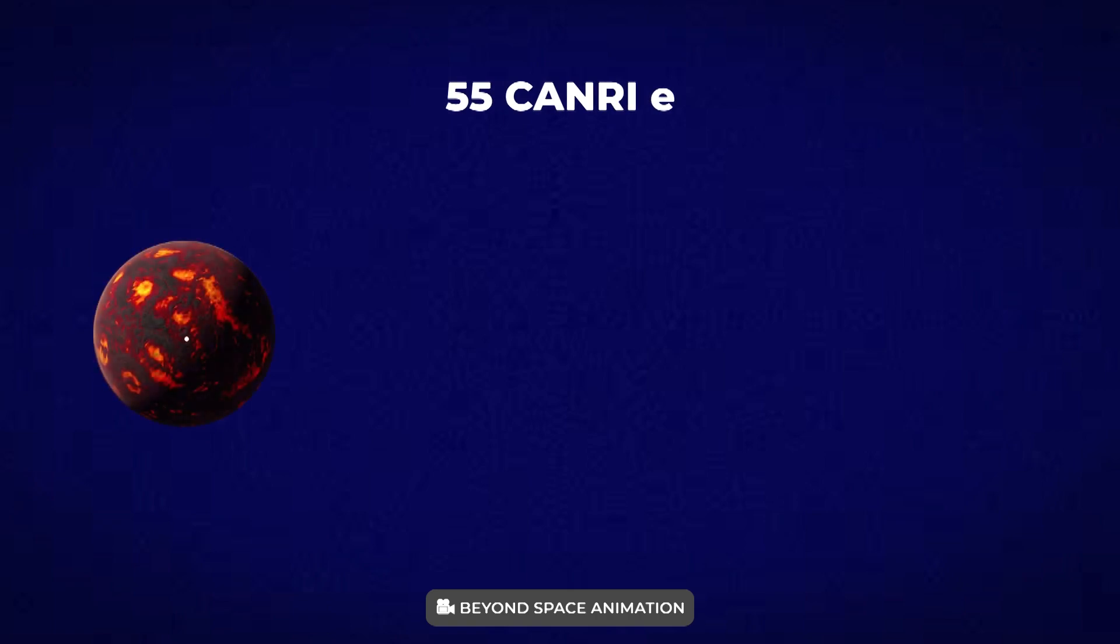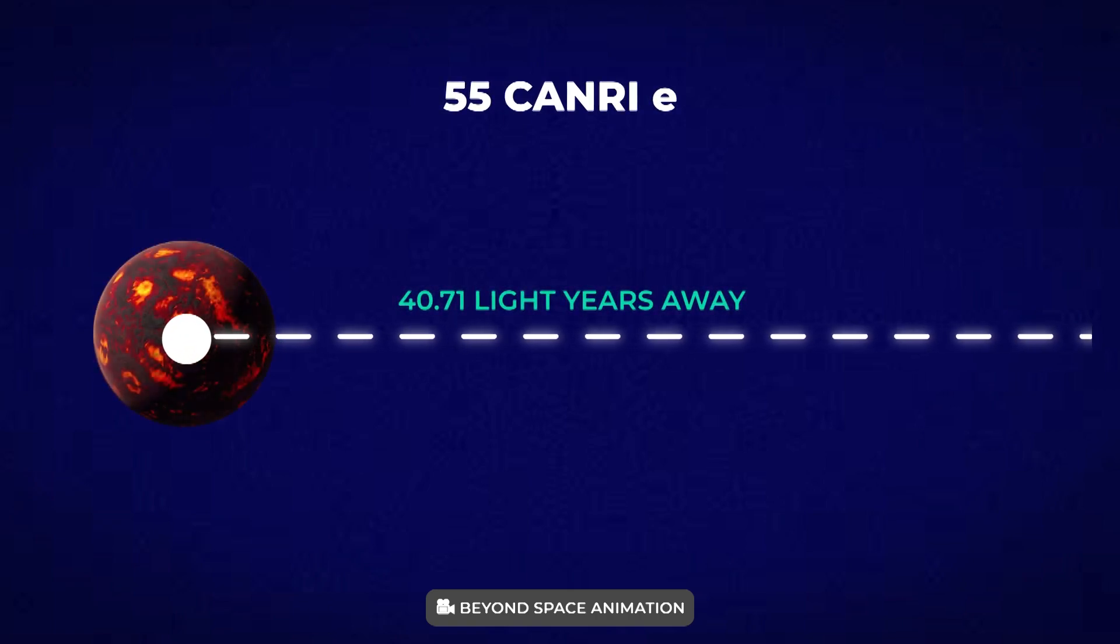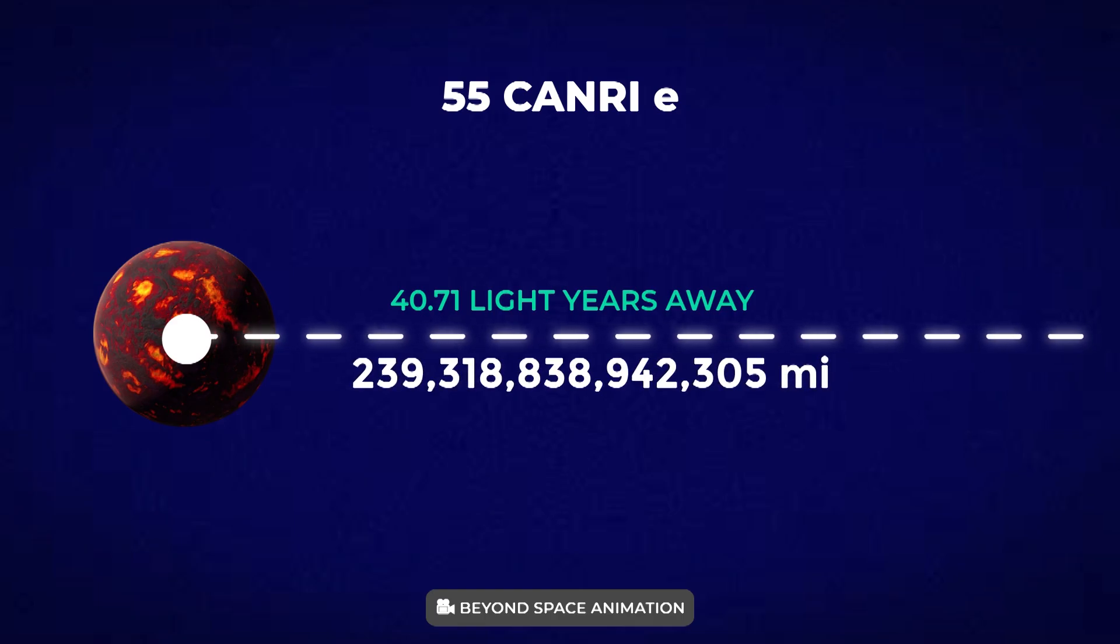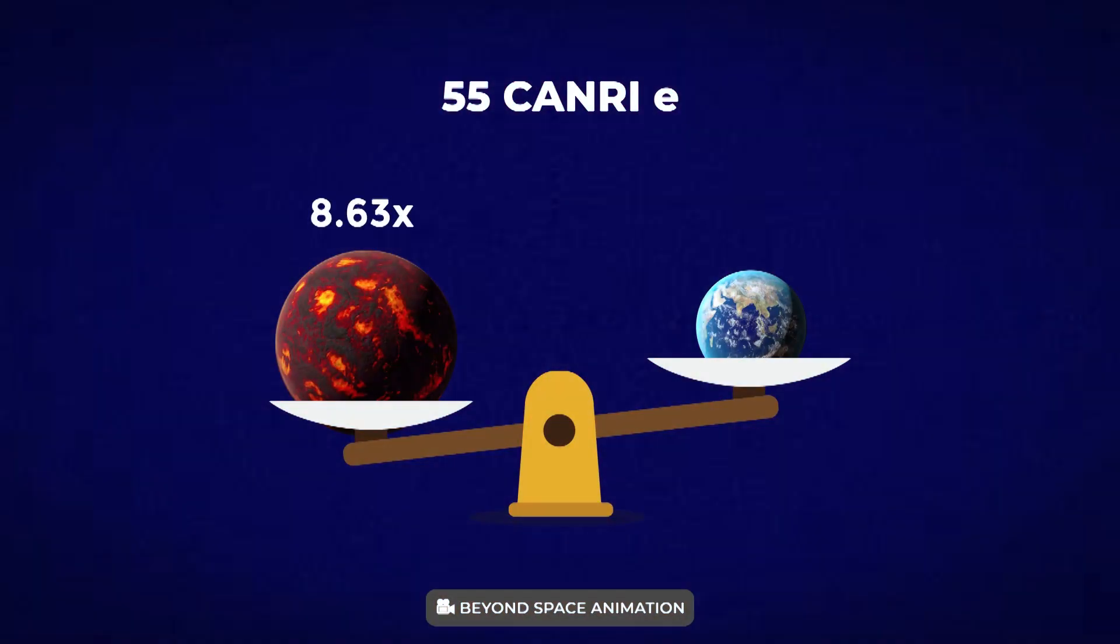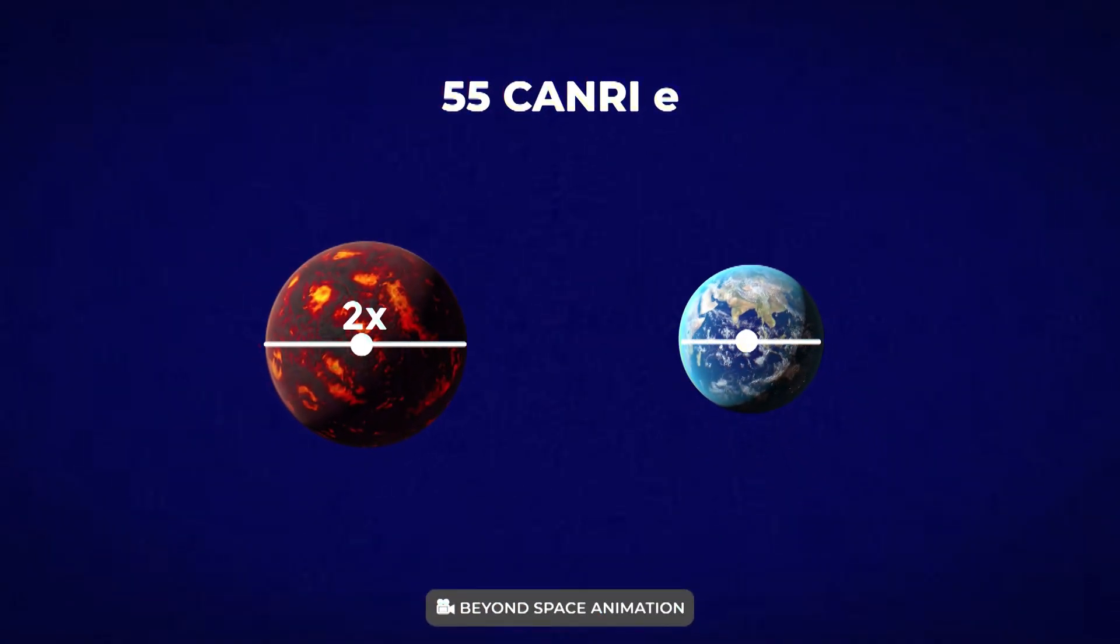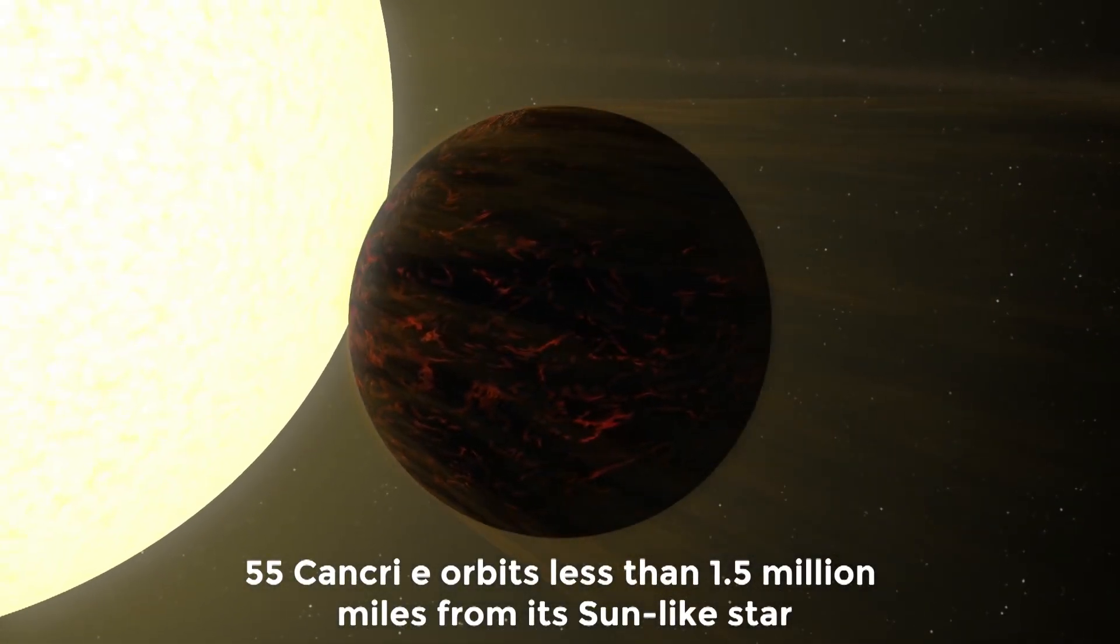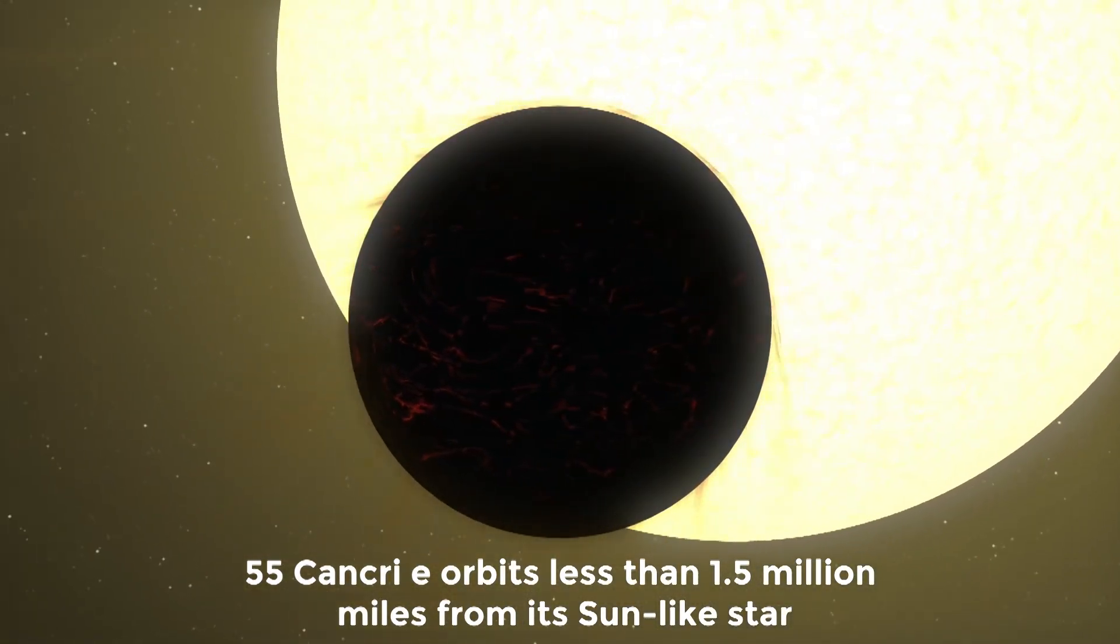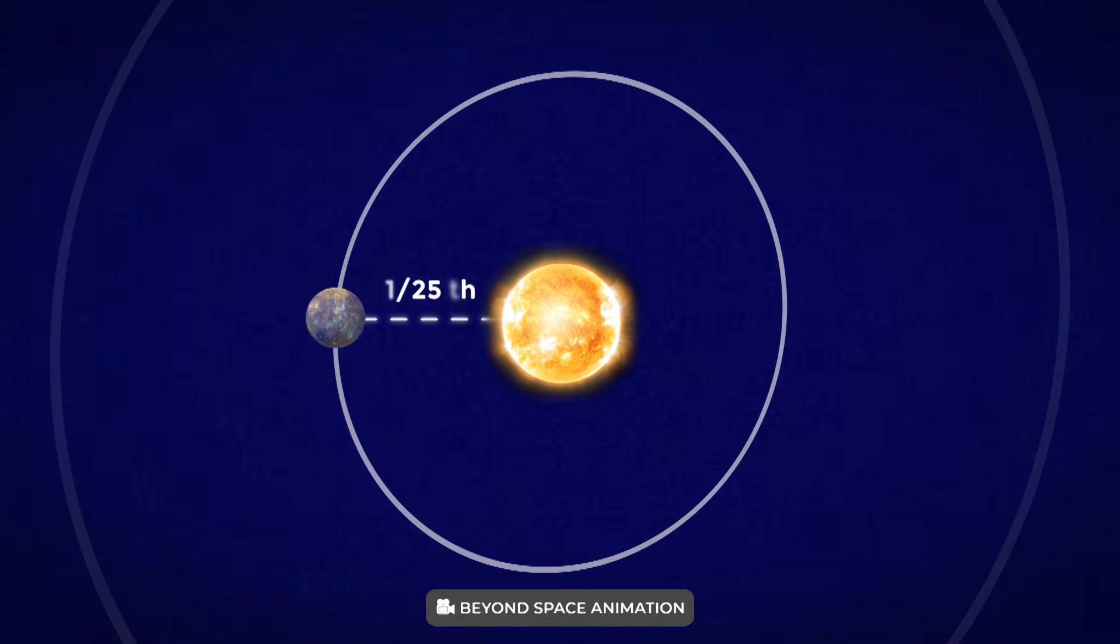55 Cancri e, an exoplanet approximately 40.71 light-years from Earth or about 239,318 billion miles from Earth, about 8.63 Earth masses, and diameter about twice that of Earth. 55 Cancri e orbits less than 1.5 million miles from its sun-like star, one twenty-fifth of the distance between Mercury and the Sun, completing one circuit in less than 18 hours.